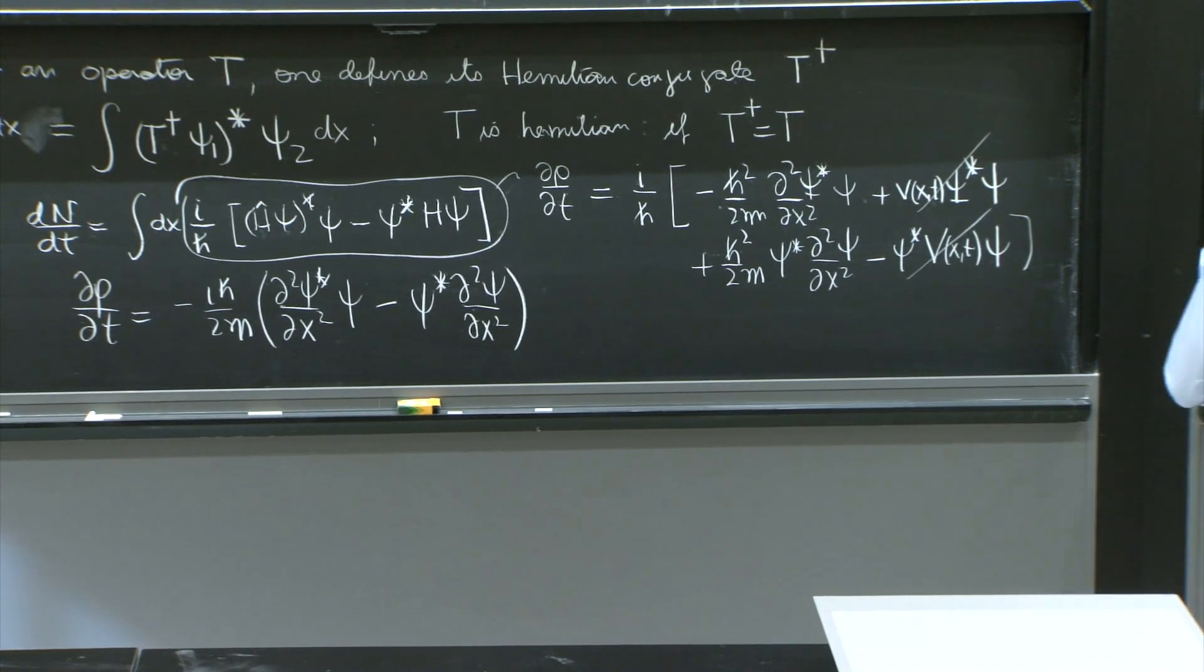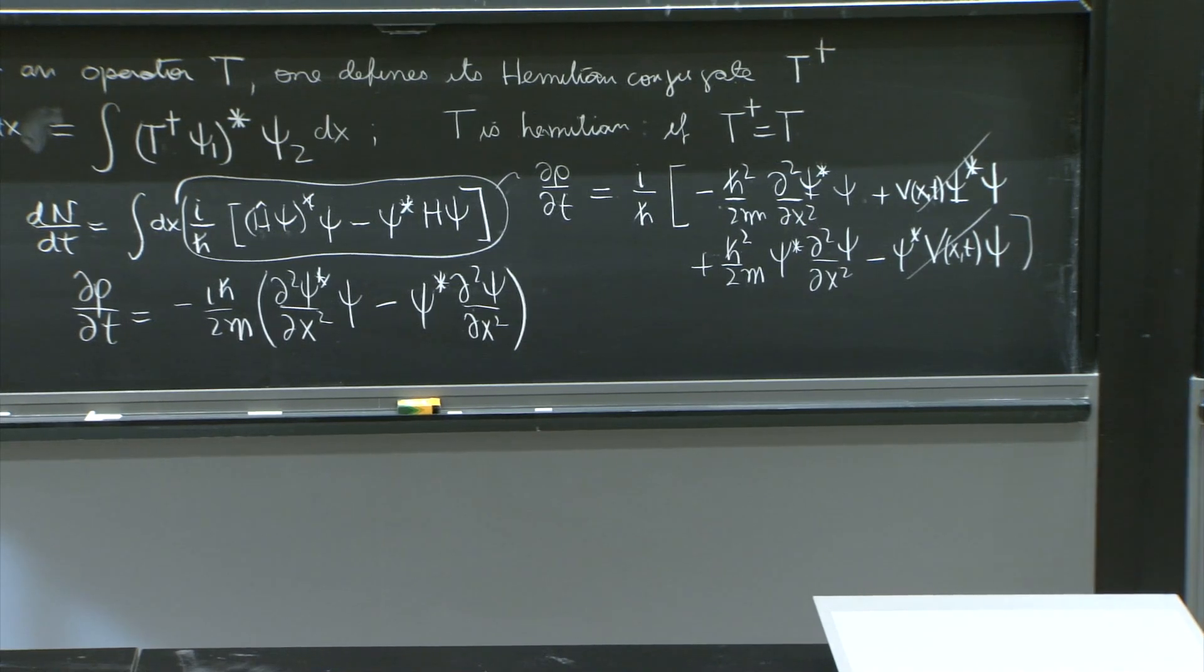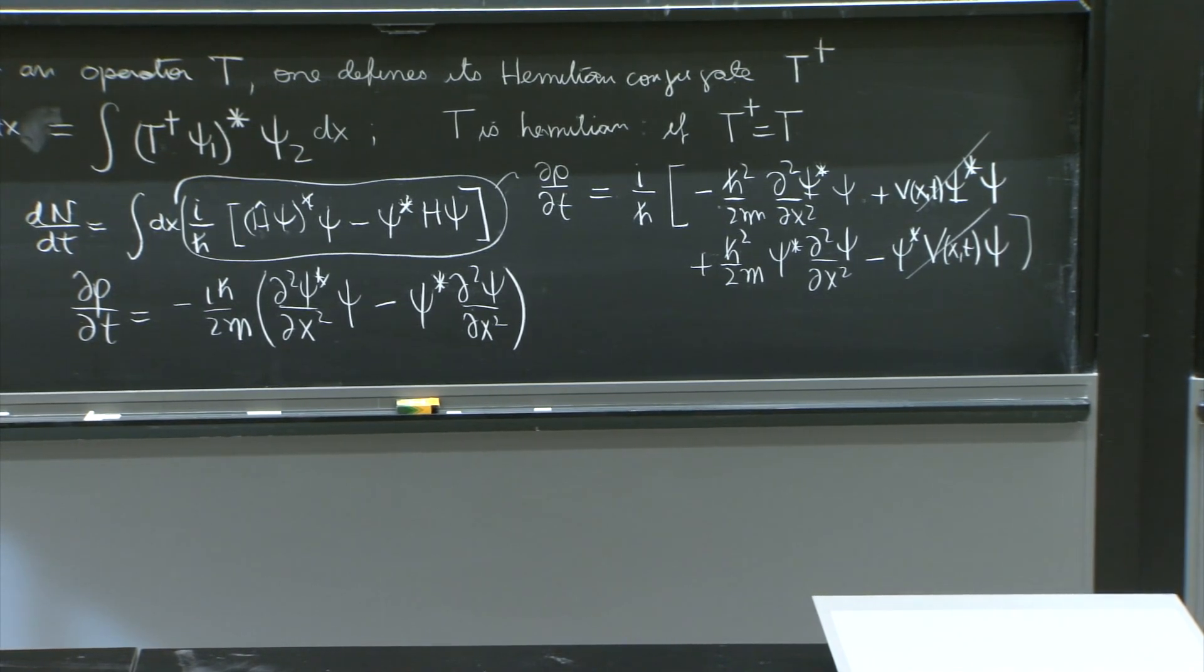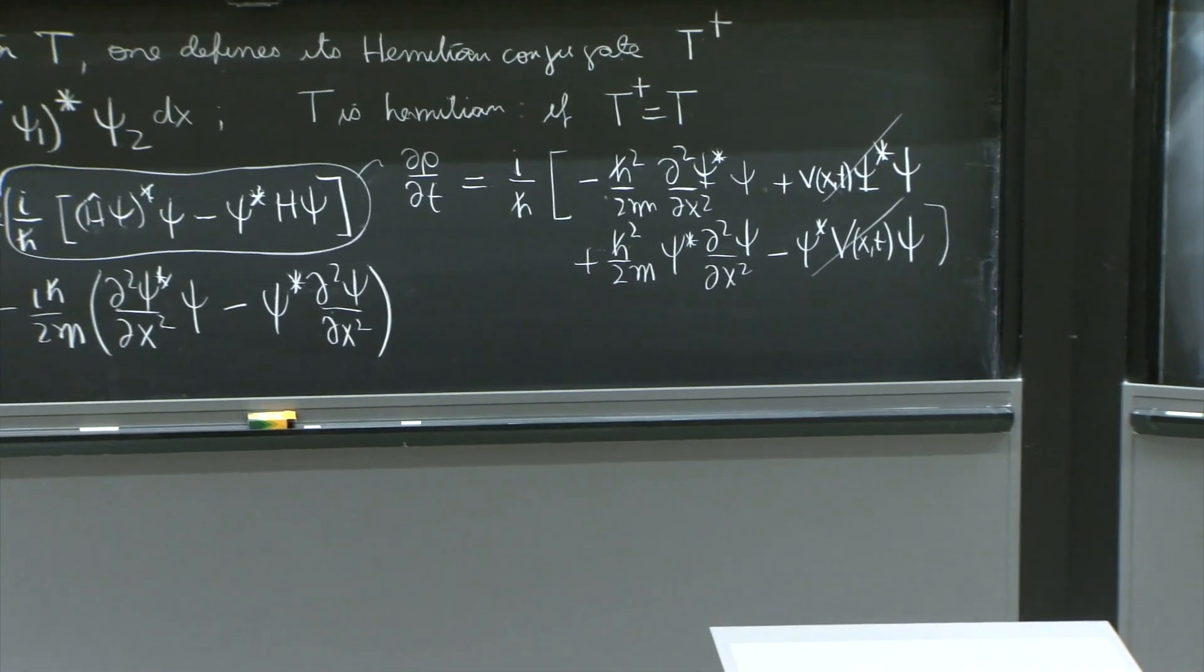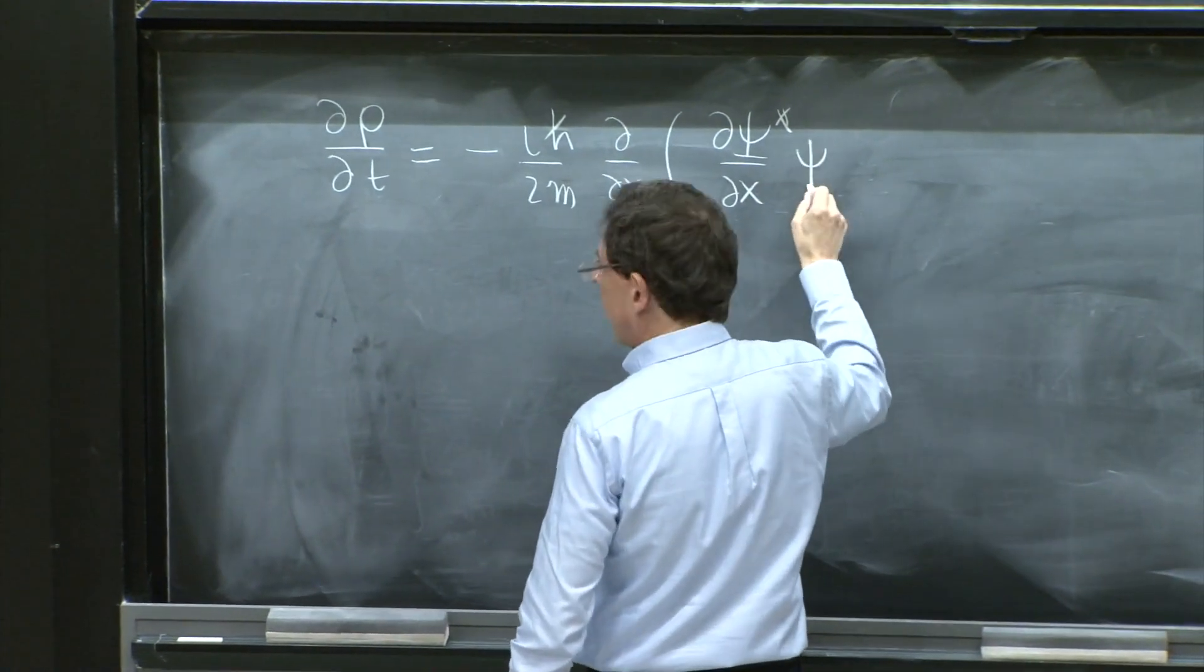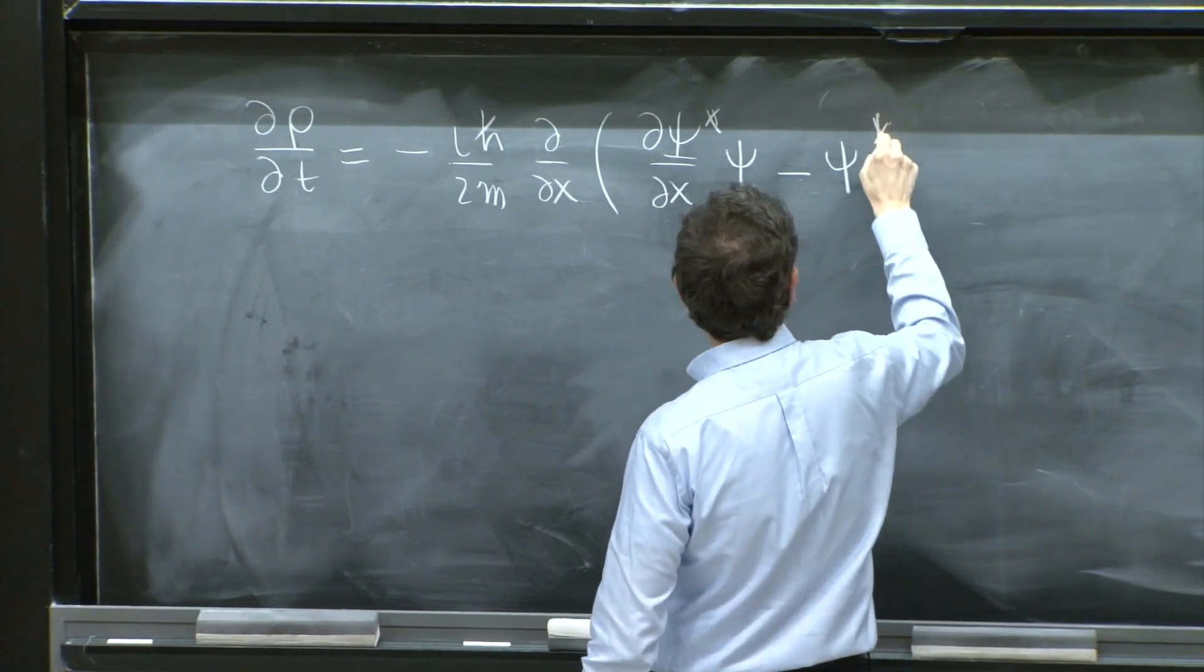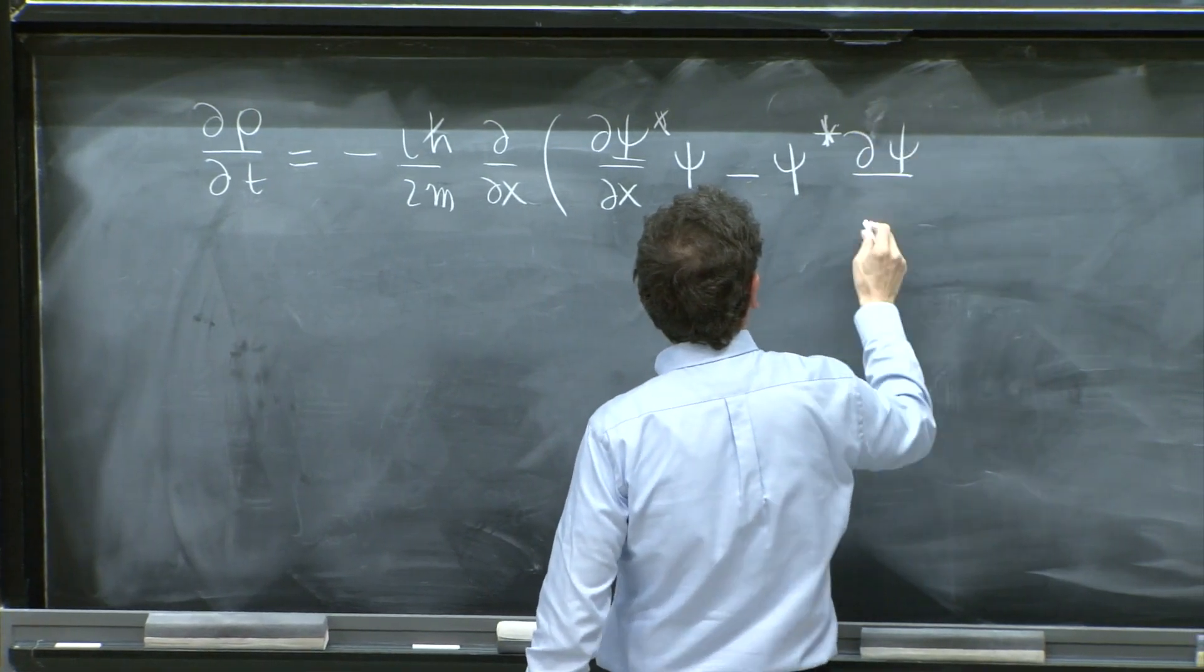So what do we have? That derivative is indeed a boundary. So d rho/dt is equal to minus ih bar over 2m. And look, this can be written as d/dx of something. And what is that something? It's d psi star/dx times psi minus psi star d psi/dx.